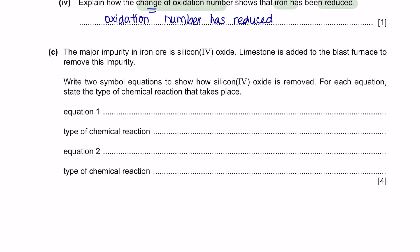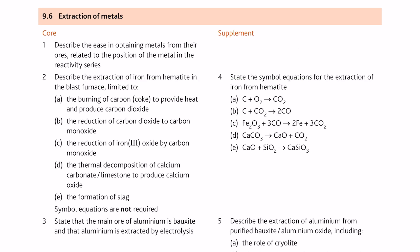Next, question C. The major impurity in iron ore is silicon oxide. Limestone is added to the blast furnace to remove this impurity. Write 2 simple equations to show how silicon oxide is removed. For each equation, state the type of chemical reaction that takes place. We are going to write the chemical reaction and equation in removing silicon oxide. Let's look at all the reactions for the extraction of iron from hematite. To remove the impurities of silicon oxide, we add it with calcium oxide. How did we get calcium oxide? Calcium oxide was obtained from calcium carbonate. Calcium carbonate has decomposed to form calcium oxide and carbon dioxide. This process is thermal decomposition. And this here is an acid-base reaction.